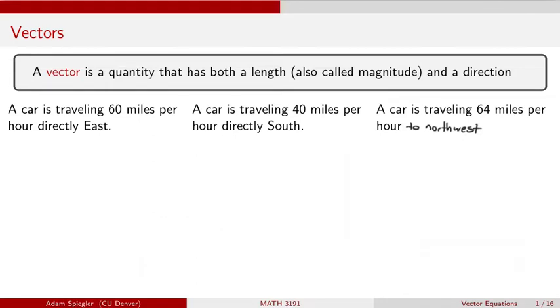Our two main building blocks in linear algebra are matrices and vectors. A vector is a quantity that has both a length, which we typically call magnitude, and a direction. Below are three different vectors.